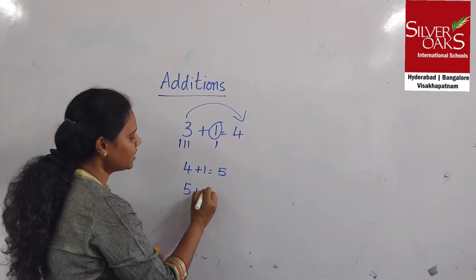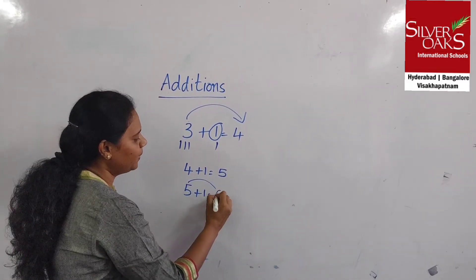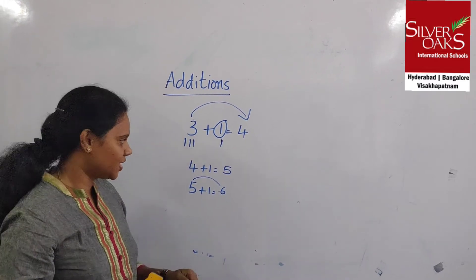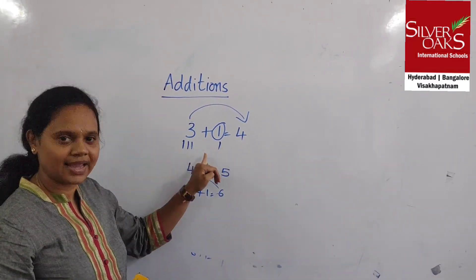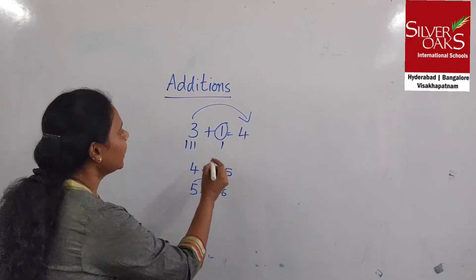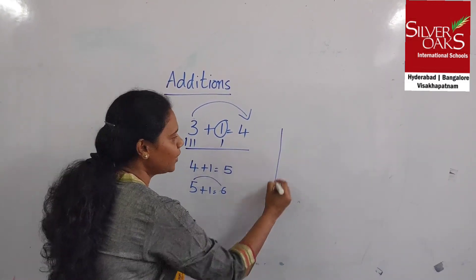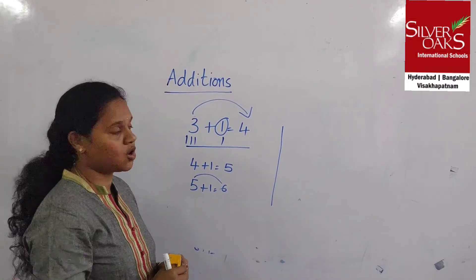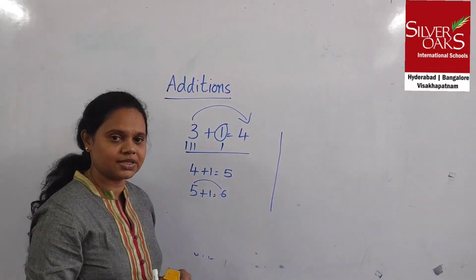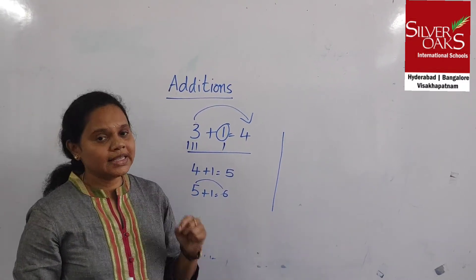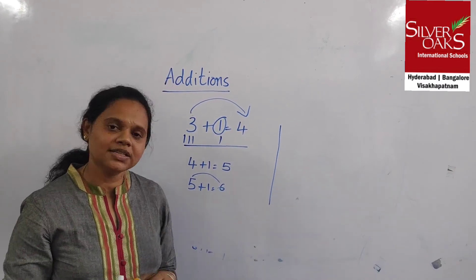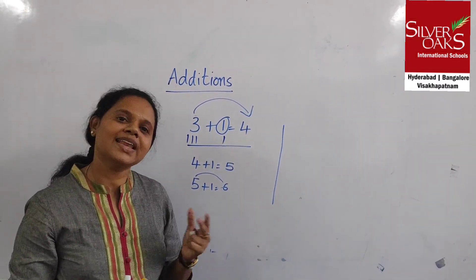So in this class we have learnt additions by drawing lines, and we have learnt how to do additions in a horizontal way and in a vertical way. We have learnt 2 important concepts: Concept 0 and Concept 1 in your additions. You can practice these addition sums — find more in your math journal and enjoy the additions. See you all tomorrow in the next class.